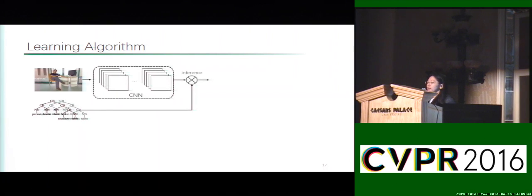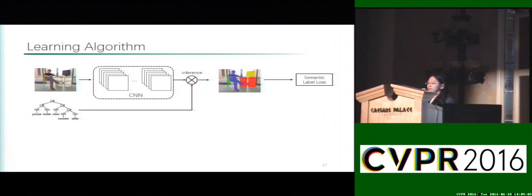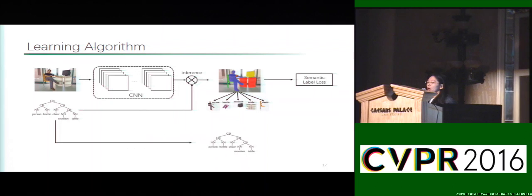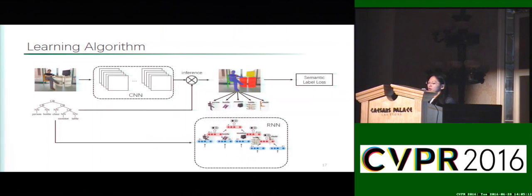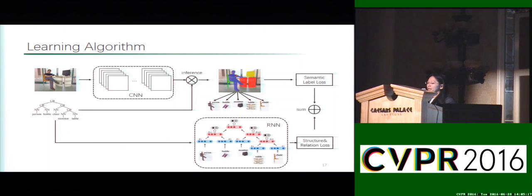During model training, first an image goes through the scene model and produces score maps of all categories. The score maps and parsed sentences are jointly used to produce the structure and configuration of the objects. Finally, the semantic label loss and structure relation loss are summed and gradients are propagated through the neural network for end-to-end training.